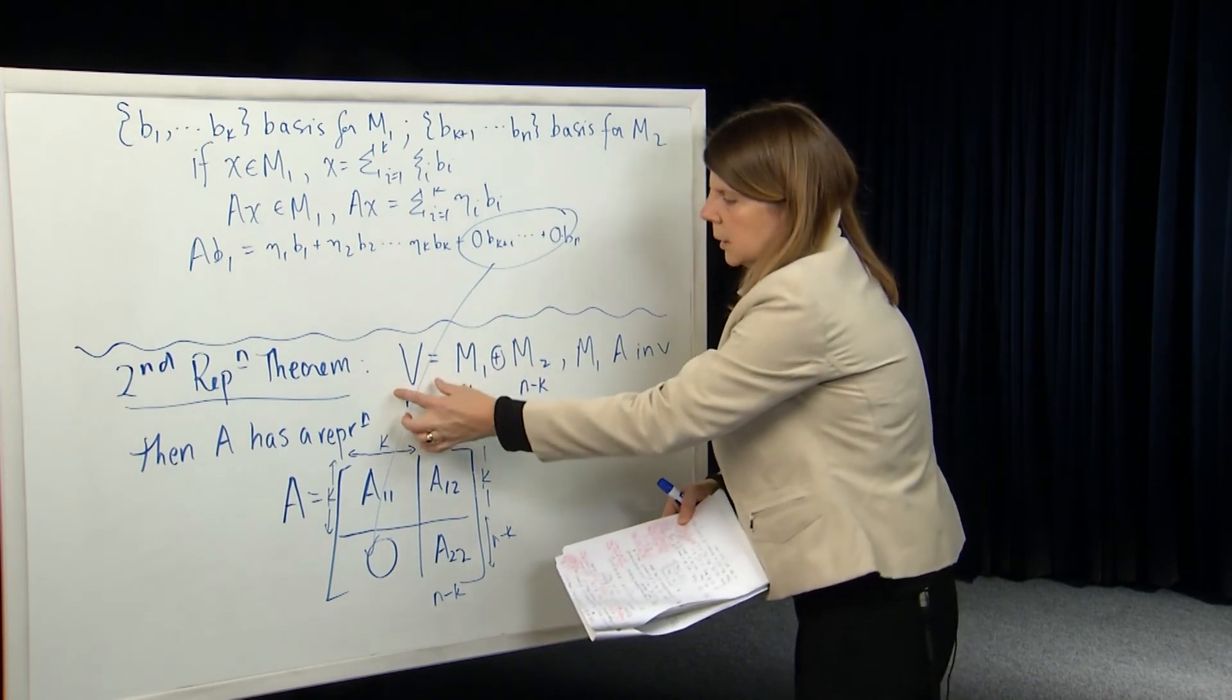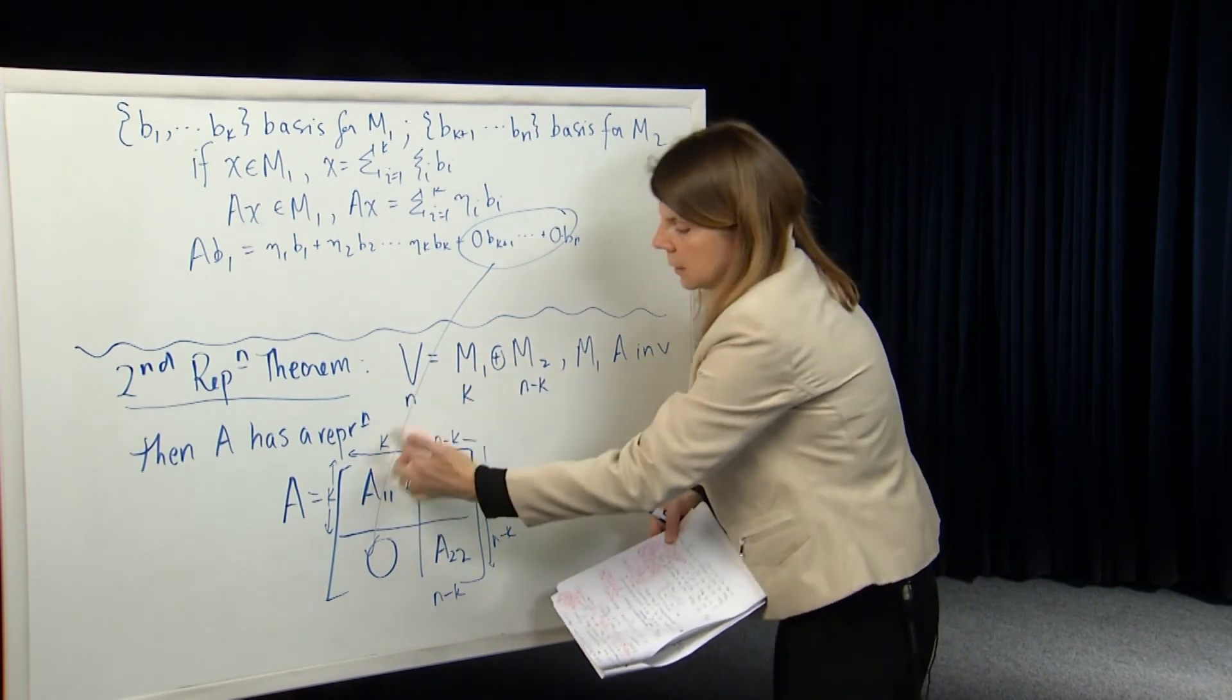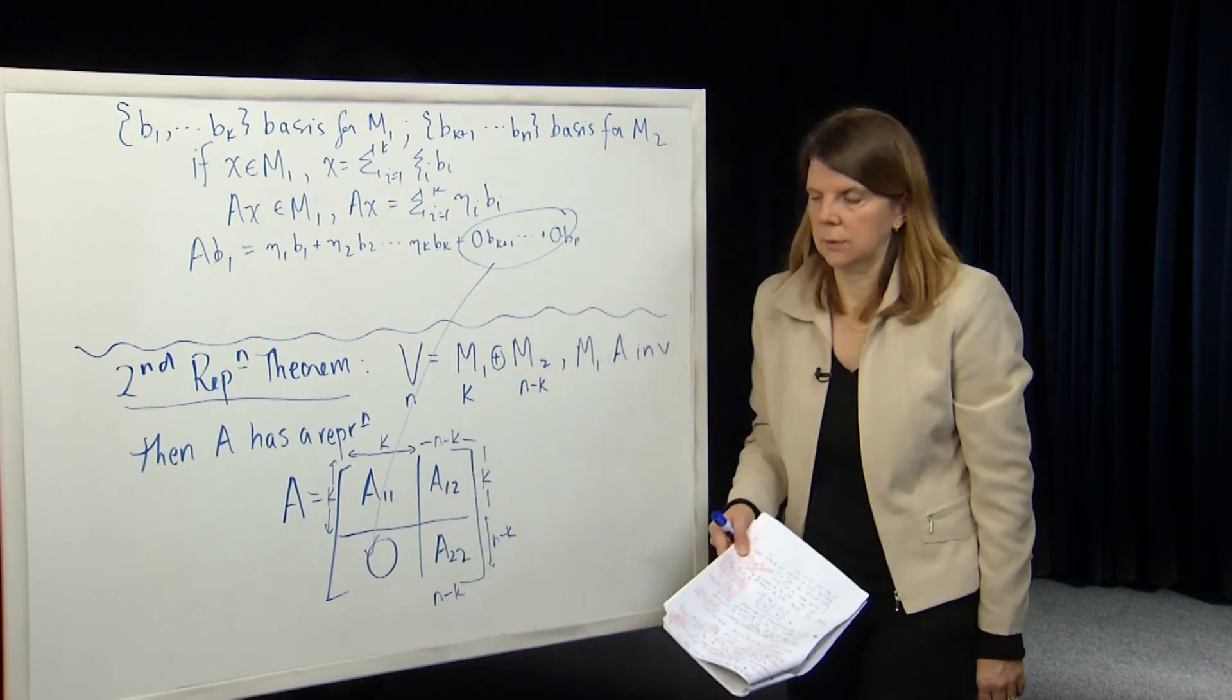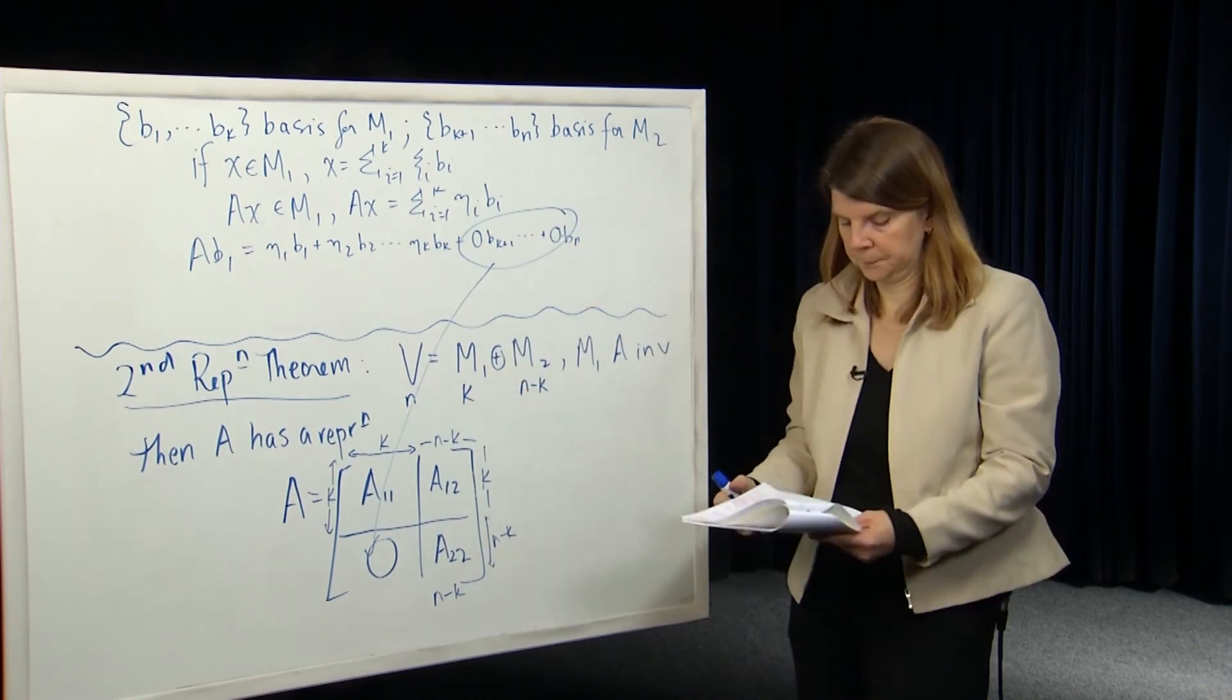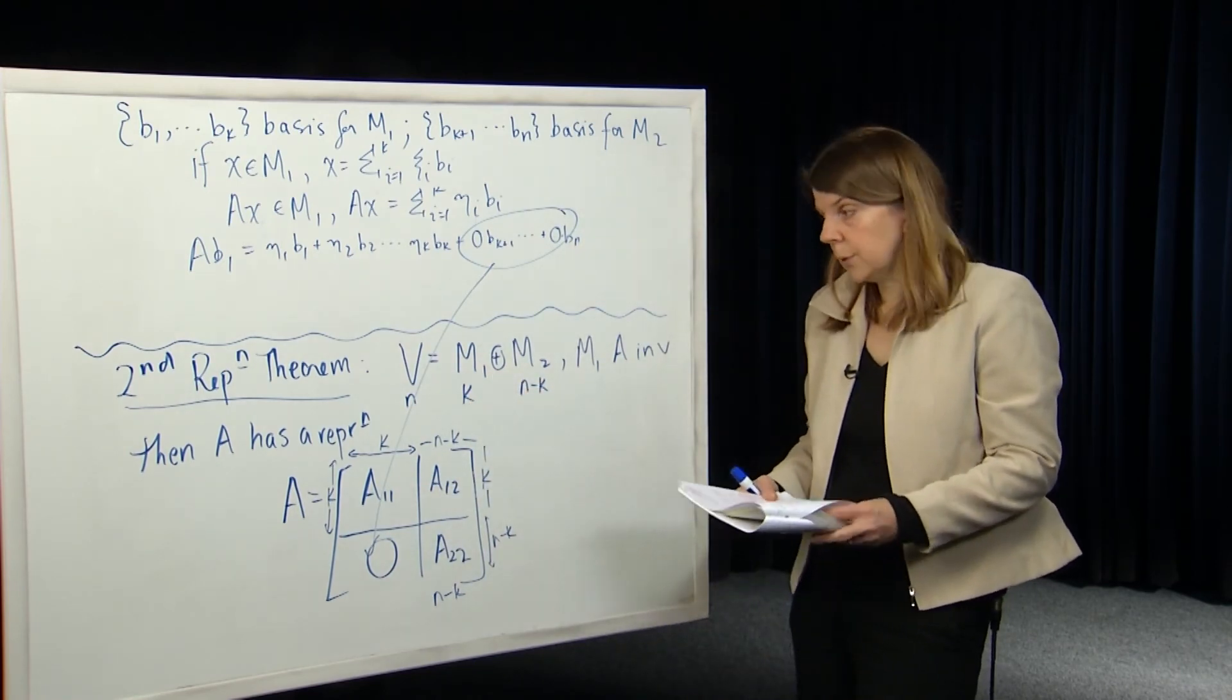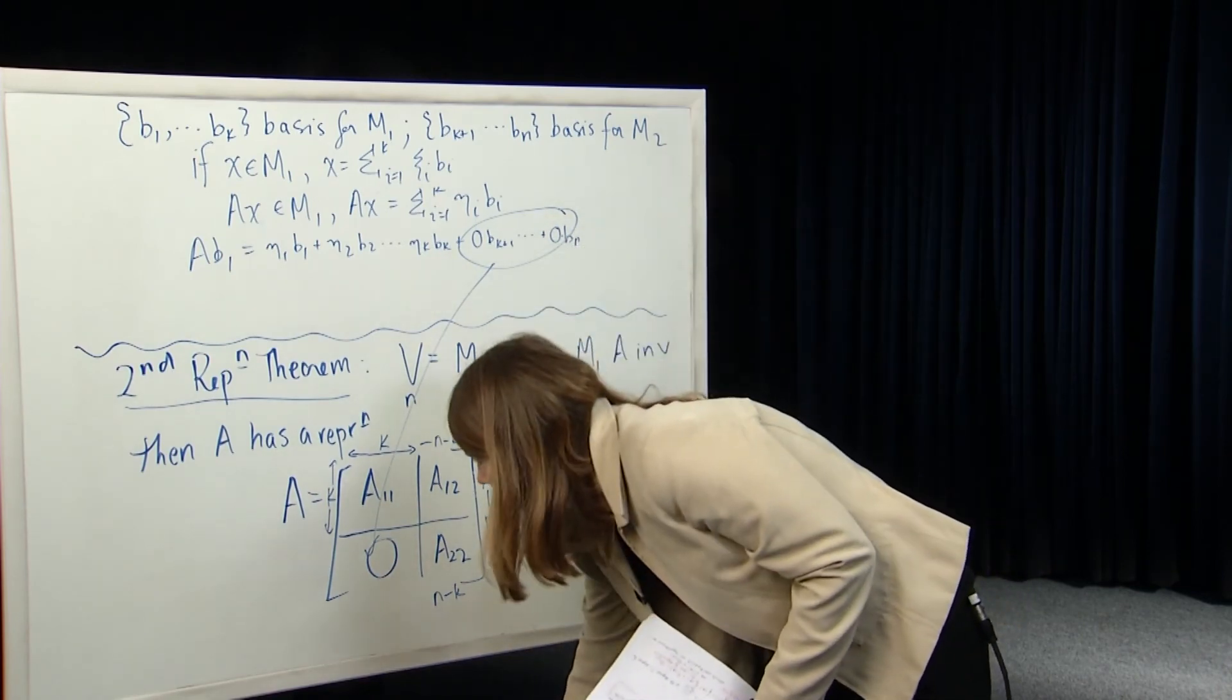So second representation theorem. If you can break a space down into a direct sum, one of them is A invariant, then you get a matrix representation as follows. So this part here is relative to the space M1.